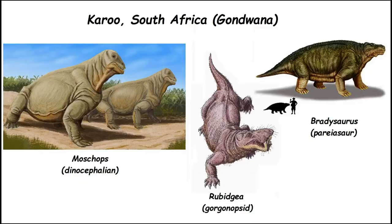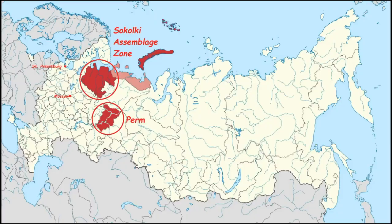These are the animals found in the southern Africa region known as the Karoo. You look at them and say one looks like a lion and another like a hippopotamus — Moschops and Bradysaurus. There's a key difference between these animals and what we have today. Imagine a lion that lays eggs. These animals laid eggs — they're known as mammal-like reptiles. They had more reptilian characteristics than mammalian. That's the type of animal that disappeared in the Karoo.